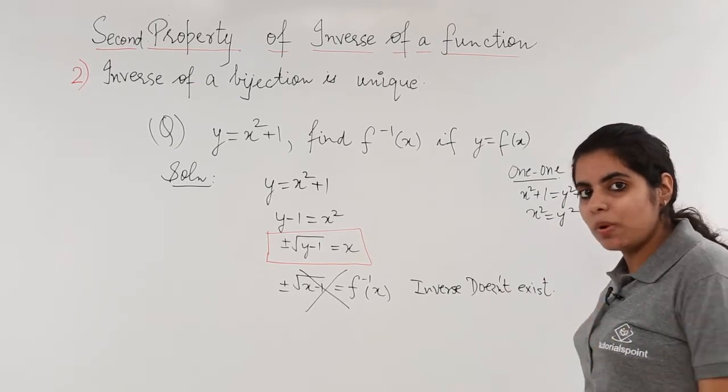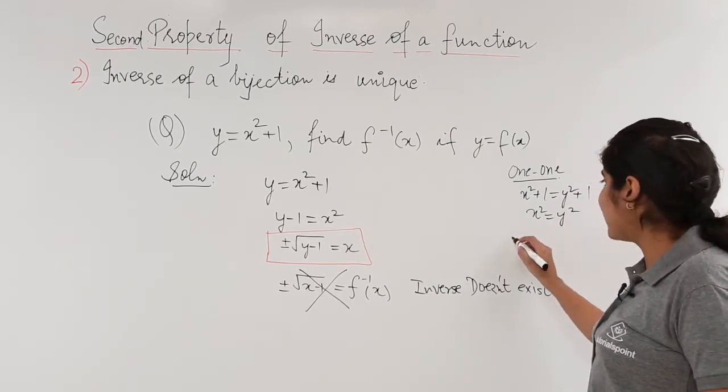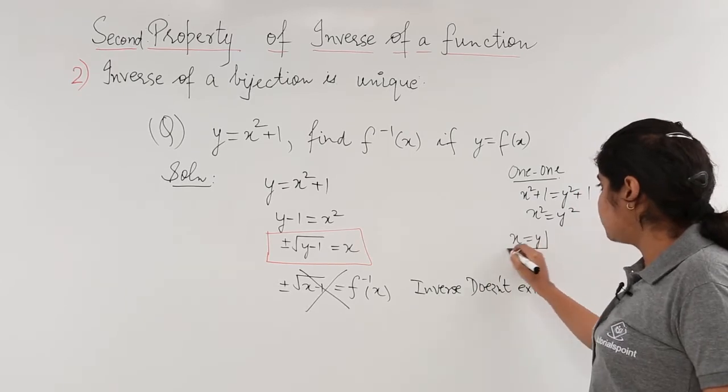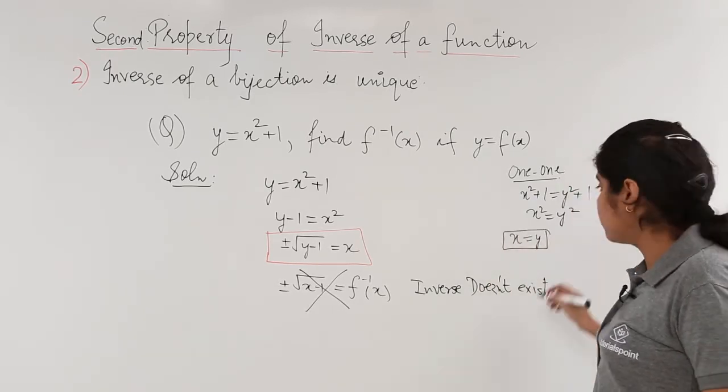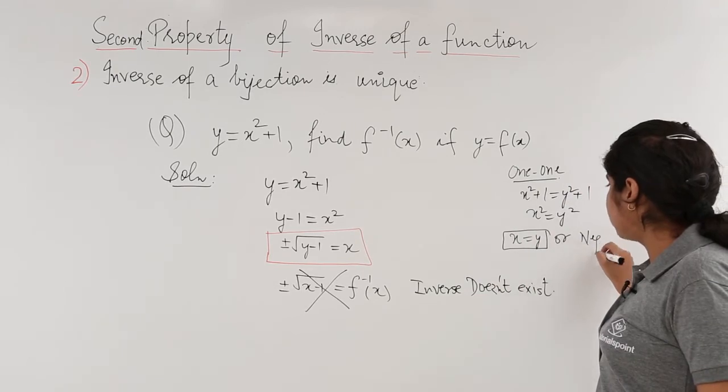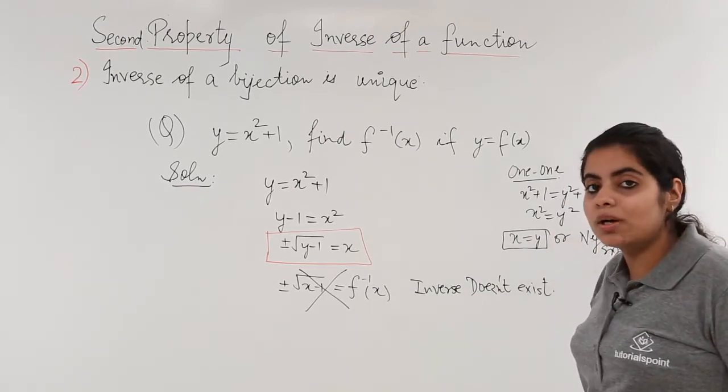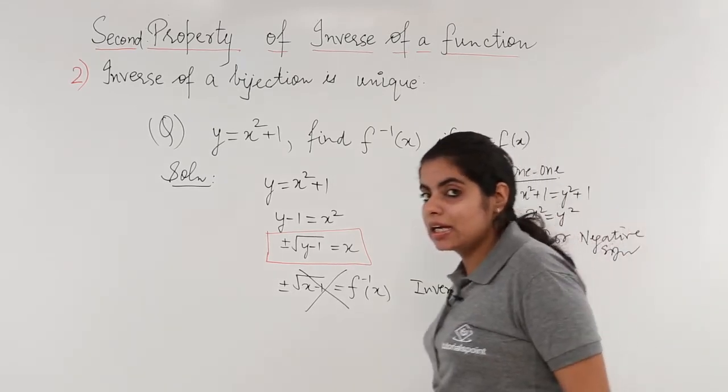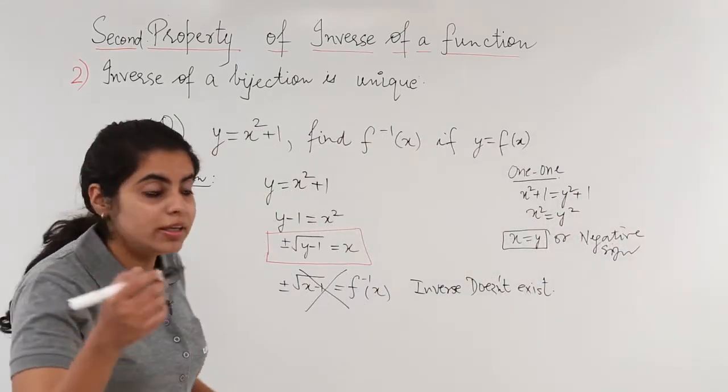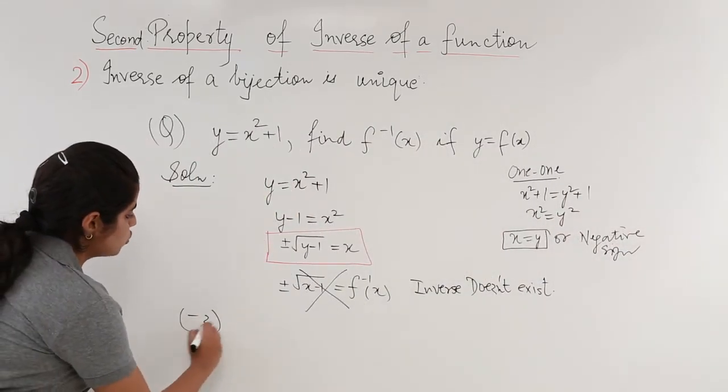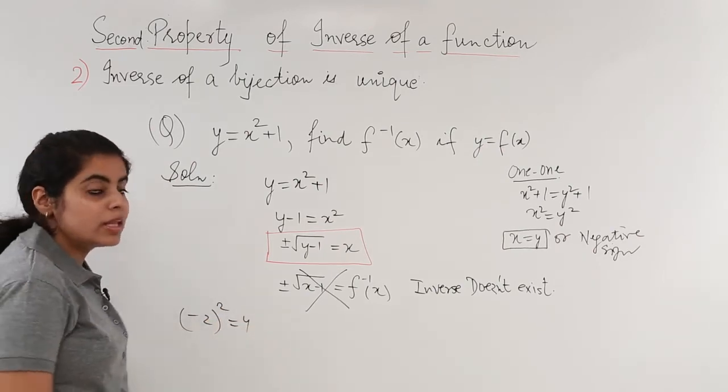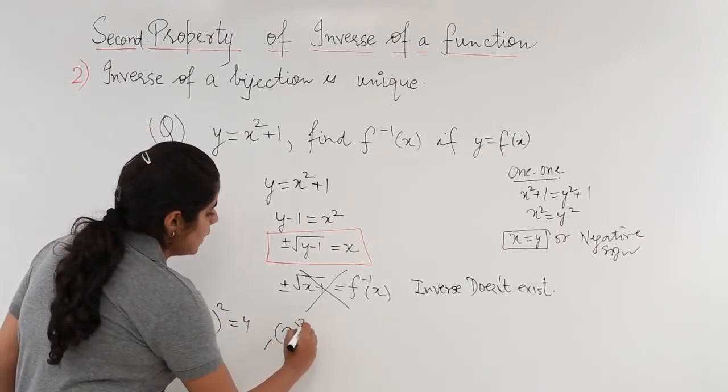Now when you take square root, you don't have x equal to y always. You would be having x equal to y or it can be also negative cases when negative sign is there. Because what happens is if you take the square of a negative number, minus 2 square is also 4 and 2 square is also 4.